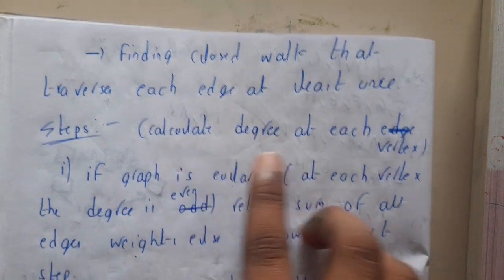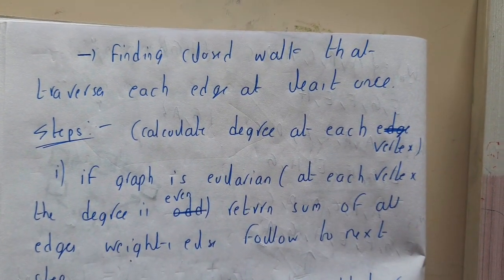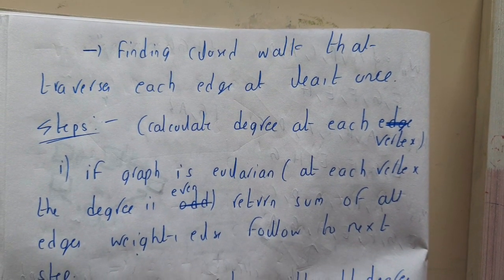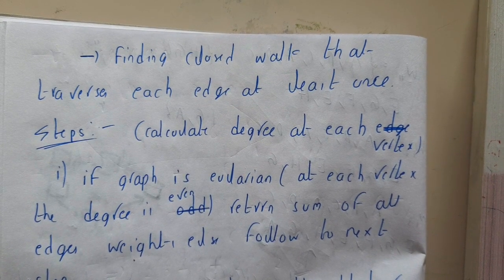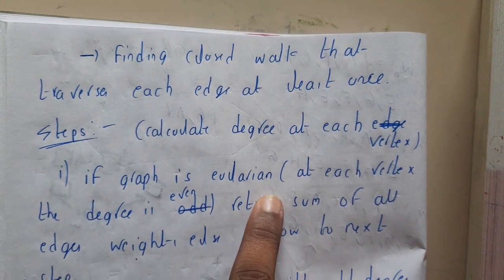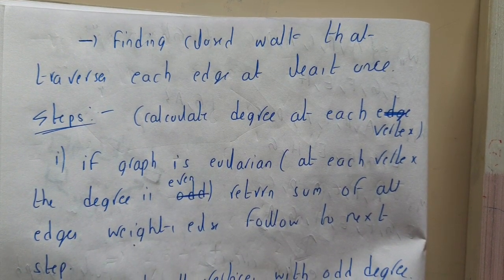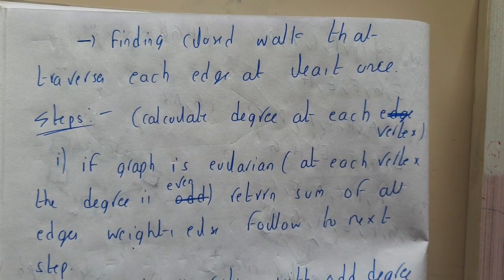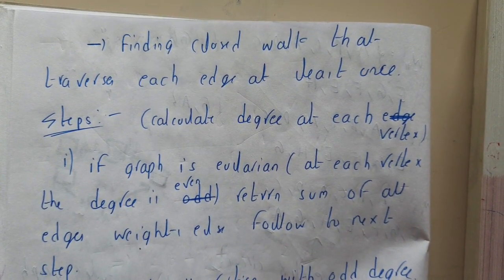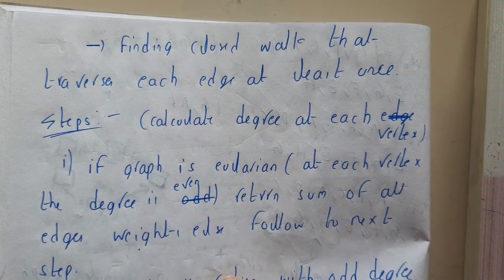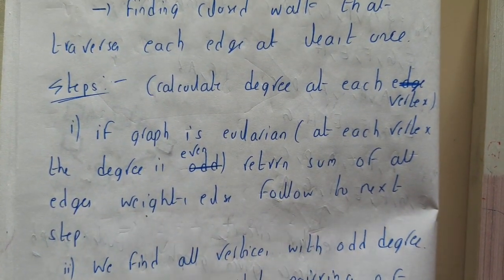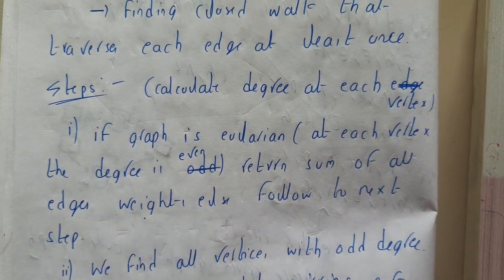Now let us go through the steps. First, calculate the degree of each and every vertex. In a directed graph you calculate the complete degree; in an undirected graph you calculate the number of incident edges. If each and every vertex degree is even, then it is a Eulerian graph - in that case just sum all the edge weights and return that as the result. Otherwise, if it is not a Eulerian graph, proceed to convert it into one.